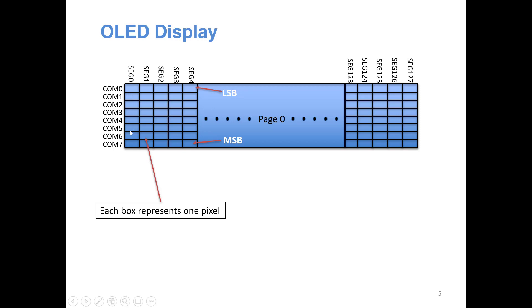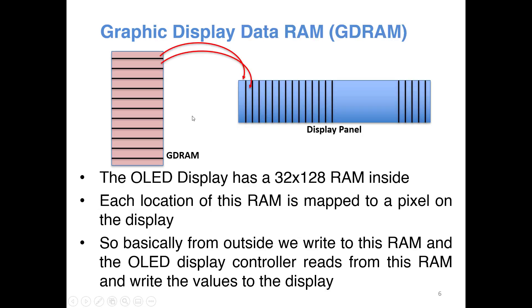Wherever a row and column intersect it makes a pixel, so there are eight pixels in one column per page. When we send data to the display, this bottom pixel is taken as the least significant bit and the top pixel is taken as the most significant bit for a particular column.